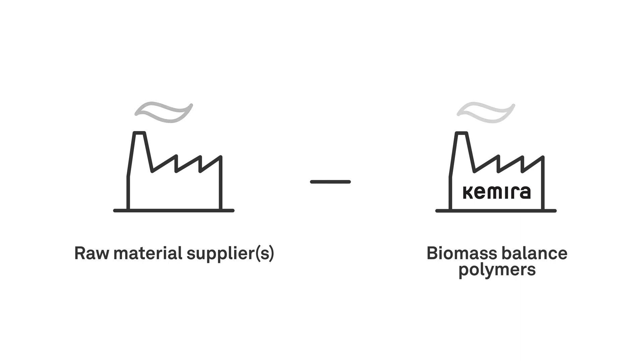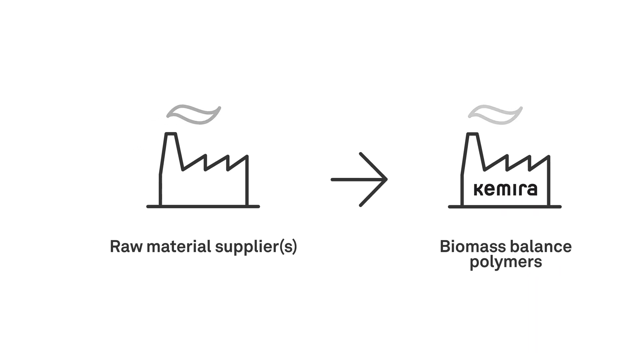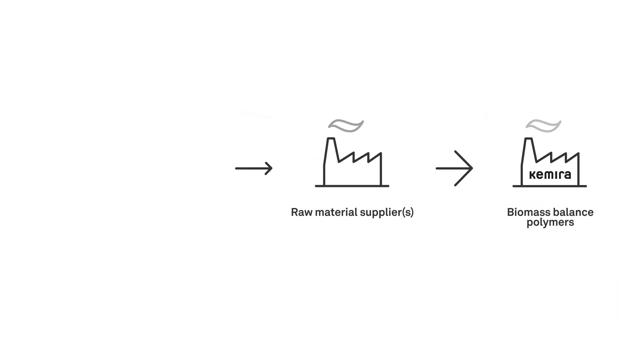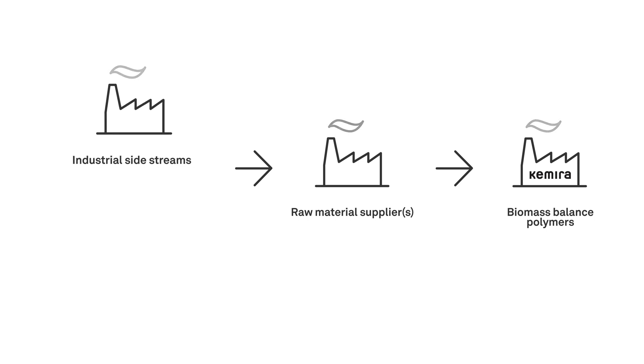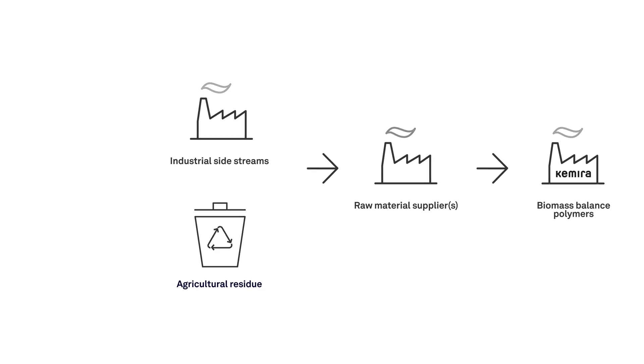Chimera sources biomass balance raw materials made by progressively greater shares of renewable resources like industrial side streams, agricultural residue, used cooking oil, and biogas.